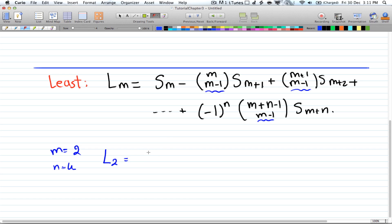So at least 2 objects will have s of 2 minus 2 choose 1 times s of 3 plus, now we have m+1 and that will be 3 choose 1 of s of 4 minus 4 choose 1 of s of 5 plus 5 choose 1 of s of 6. That's it, we're done.